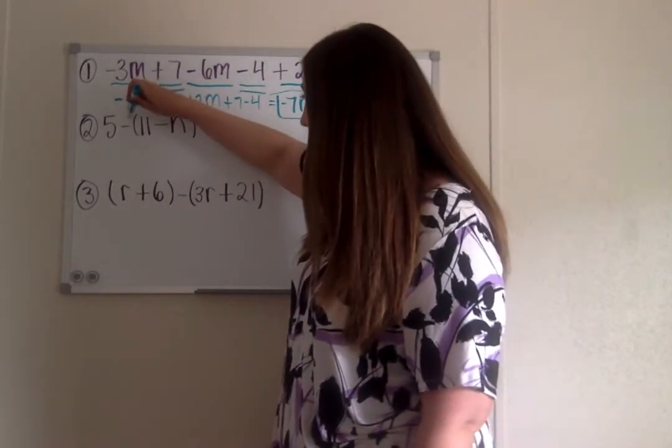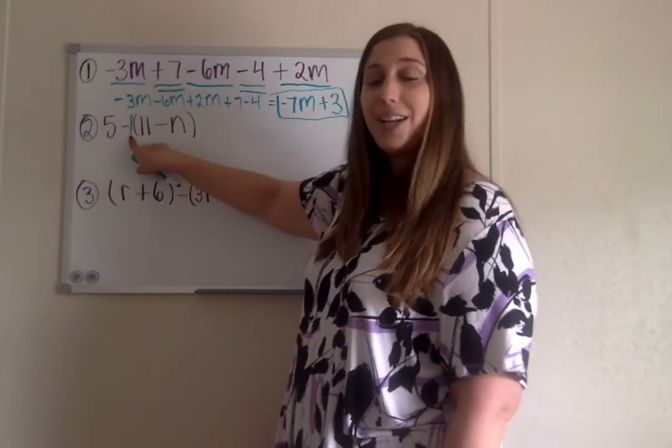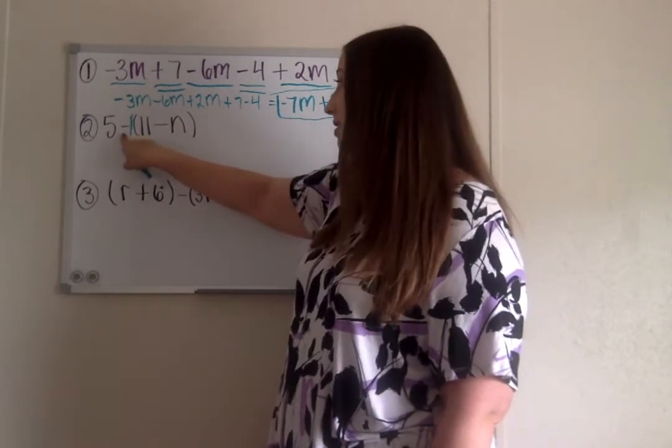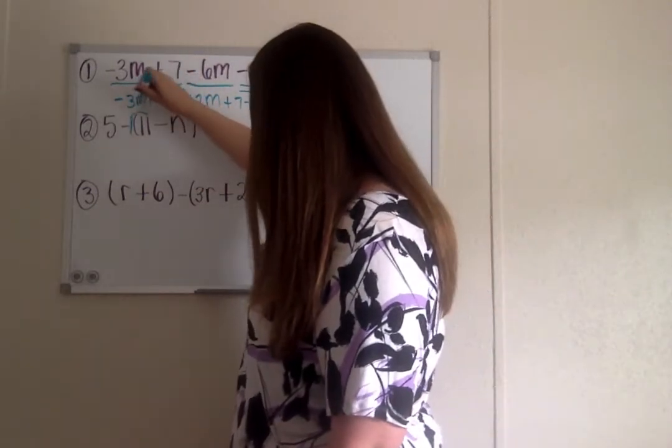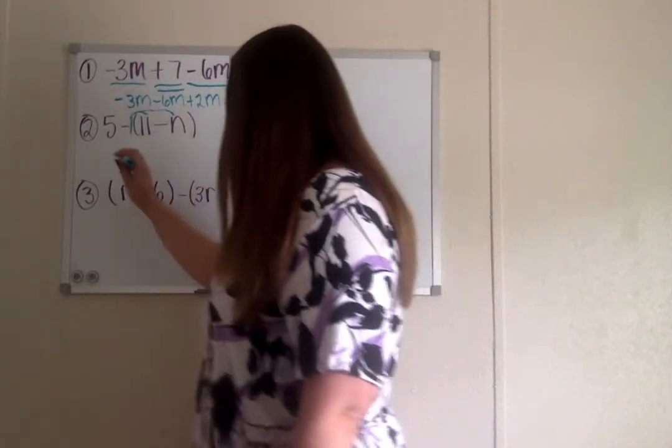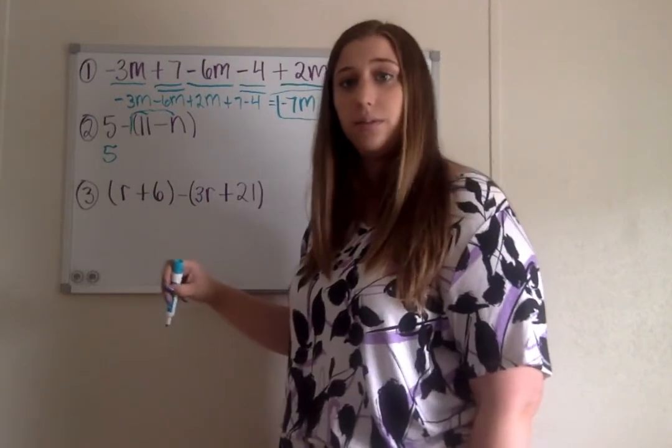So here, lots of things we have to keep remembering. We have to know that even though there's not a number here, it's like there's an imaginary one there, but in this case it's actually a negative one because that negative is in front of it. So I'm saying we're distributing that negative 1.